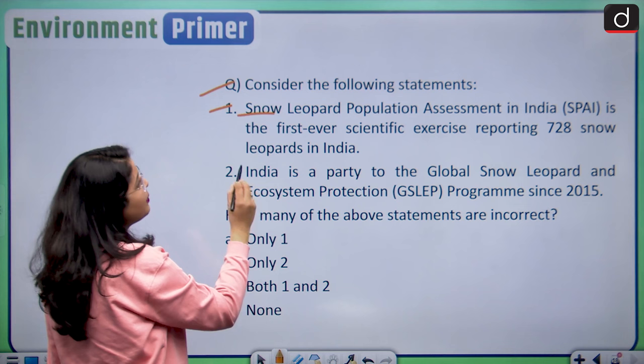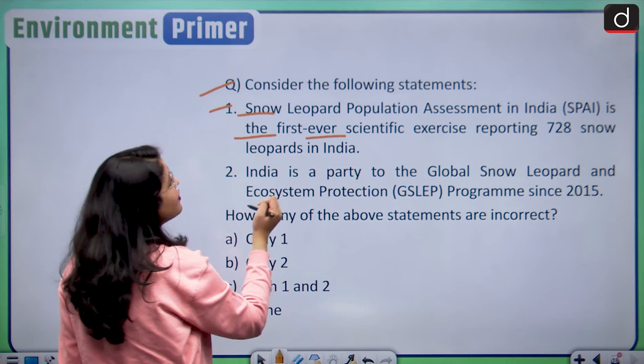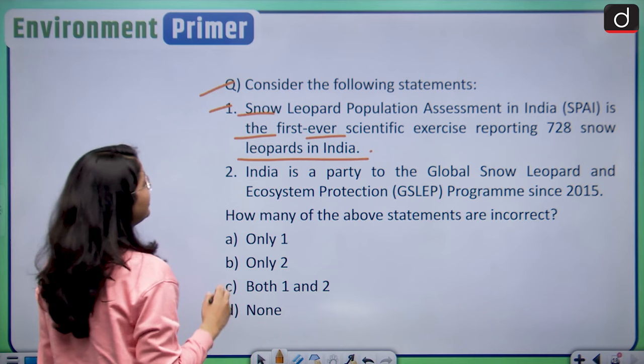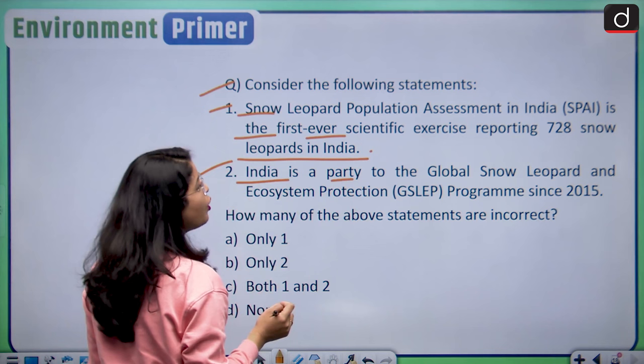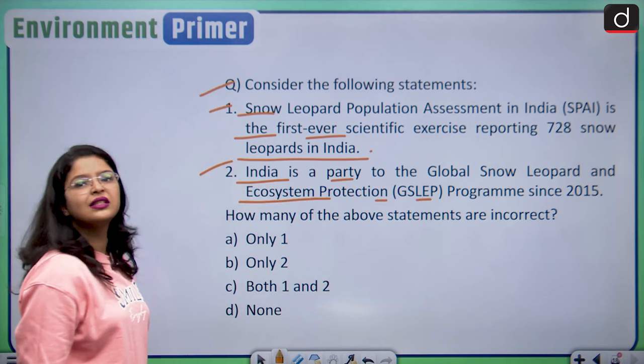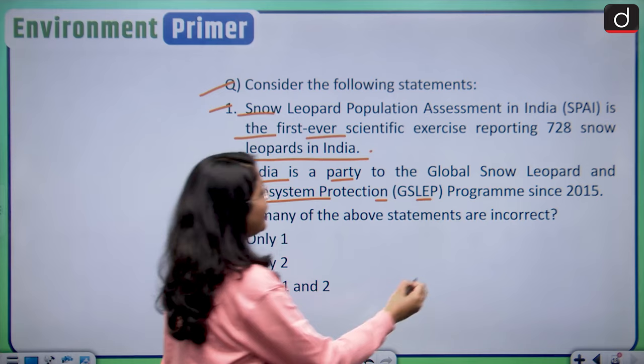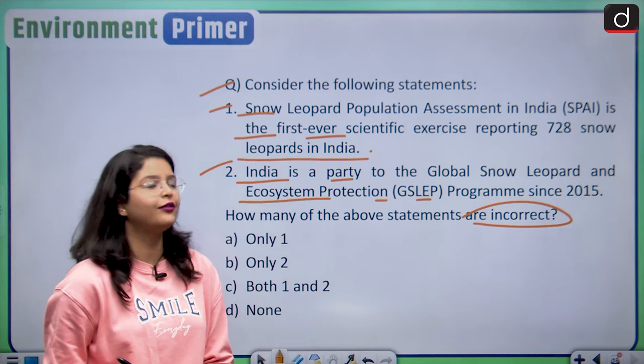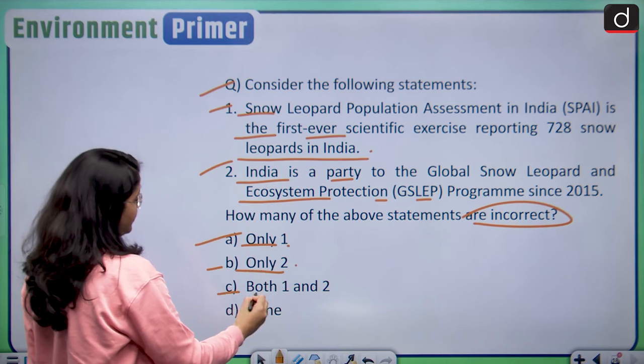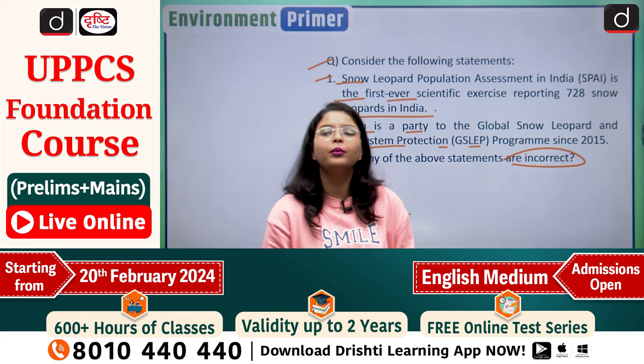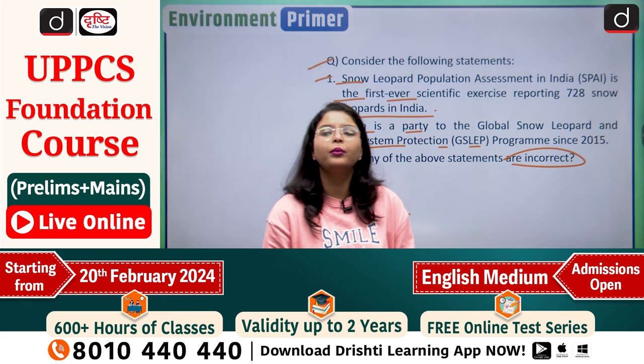Another question: Consider the following statements. Statement 1: Snow Leopard Population Assessment in India (SPAI) is the first ever scientific exercise reporting 728 snow leopards in India. Statement 2: India is a party to the Global Snow Leopard and Ecosystem Protection (GSLEP) programme since the year 2015. How many of the above statements are incorrect? Options: A — only 1, B — only 2, C — both 1 and 2, D — none of the above. Kindly drop the answer in the comment box below.